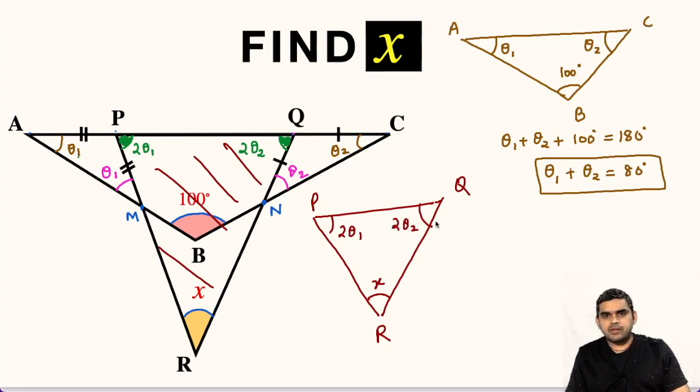We will apply angle sum property in this triangle PQR. So we will get 2 theta 1 plus 2 theta 2 plus x equals 180 degrees. So we can take 2 common. So 2 times (theta 1 plus theta 2) plus x will be equal to 180 degrees.